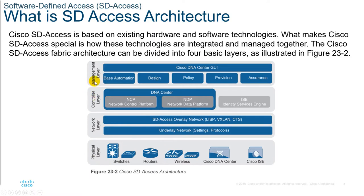The Cisco DNA Center GUI is on the management layer, where administrators interact with centralized management. It drives base automation, design, policy, provision, and assurance. For design, it configures device global settings, network site profiles, physical device inventory, DNS, DHCP, IP addressing, SWIM repository, device templates, and telemetry configurations such as Syslog, SNMP, and NetFlow.